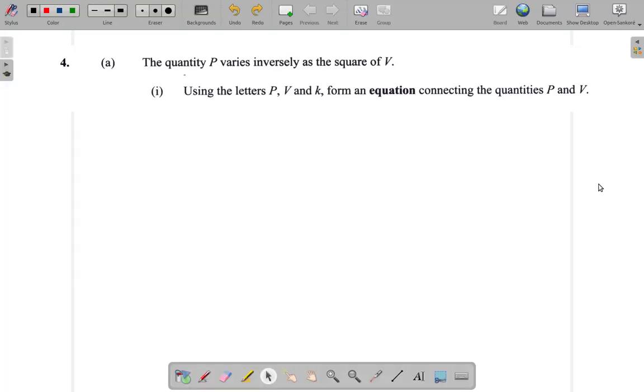Question 4 of the CSEC May 2019 past paper. The quantity P varies inversely as the square of V. Using letters P, V and K, form an equation connecting the quantities P and V. Alright, let's see what's happening here.